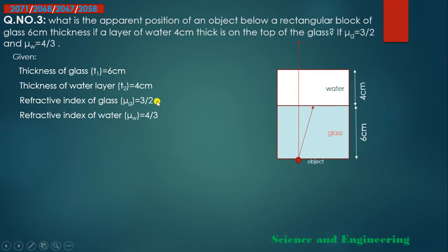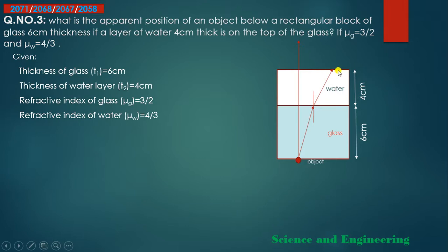Glass has a higher refractive index (denser) and water is rarer. Going from denser to rarer medium, light bends away from the normal. Draw the normal, bend the light away from the normal. Then at the water-air interface, water is denser than air, so again going from denser to rarer — light bends away from the normal at that interface too.